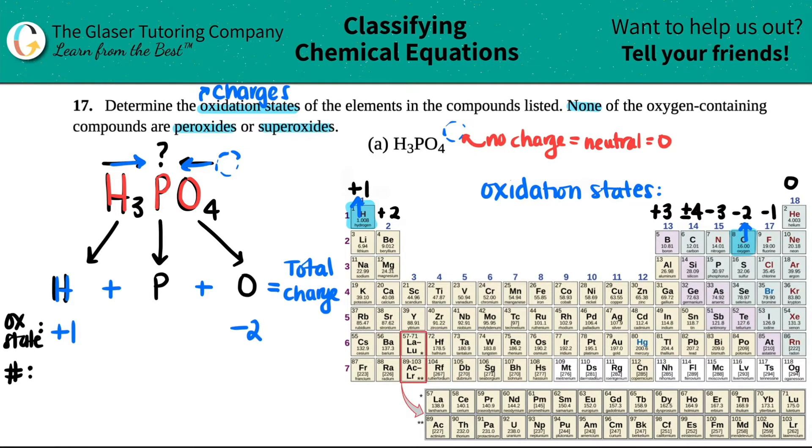And I just want to say that if none of the oxygen containing compounds are peroxides and superoxides, that means oxygen must have a negative two charge. Only when you have peroxides or superoxides, the oxygen charge or oxidation state will change.